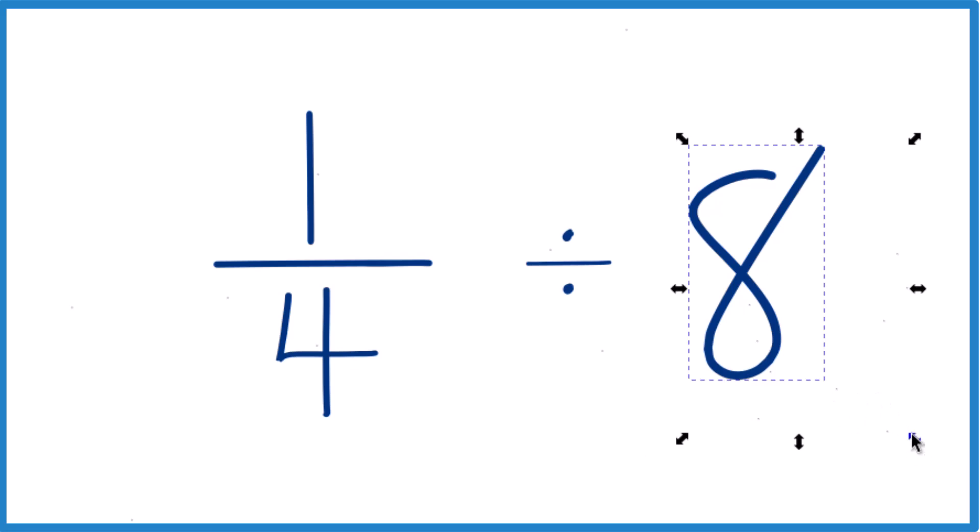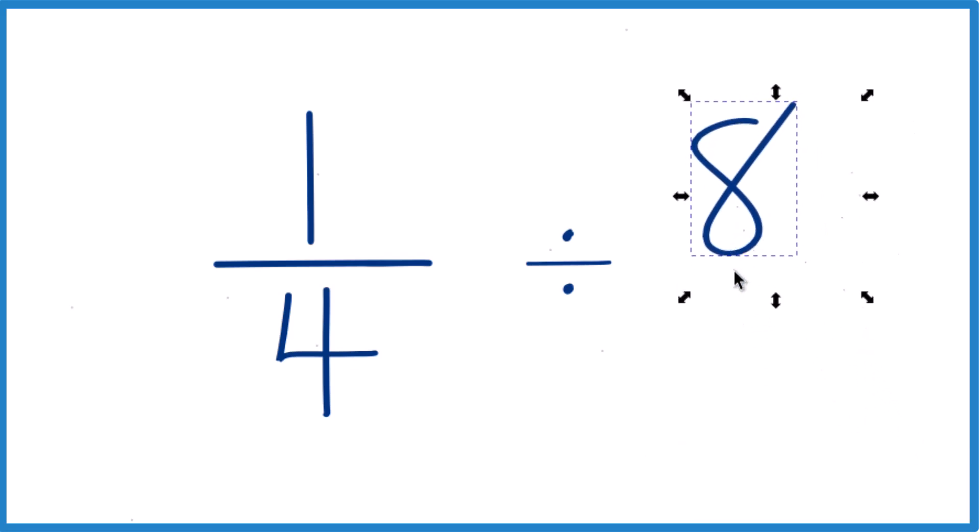Next, I'm going to take this 8 here, and I'm going to call this 8 over 1. That way, 8 over 1 is still 8. We're just dividing by 1, but everything lines up real nice now.